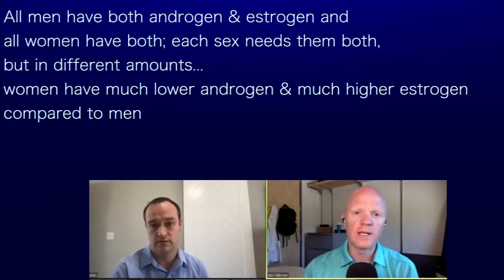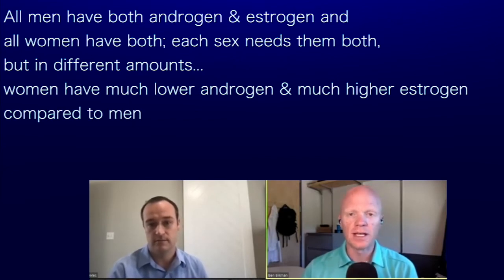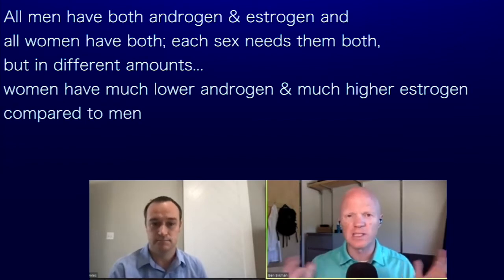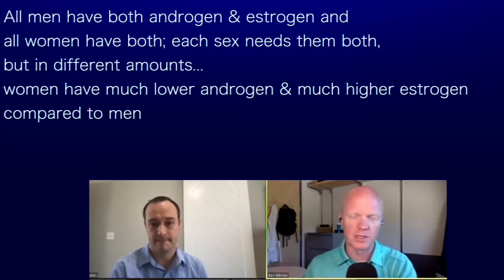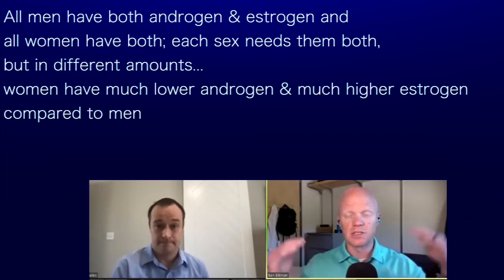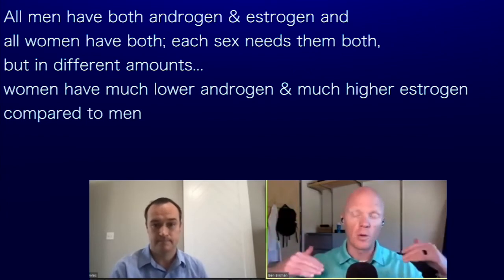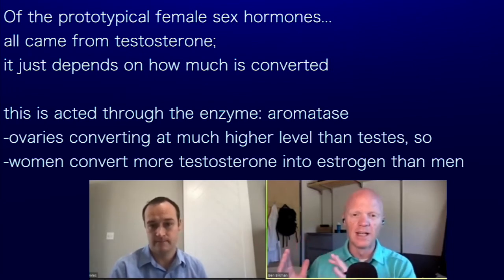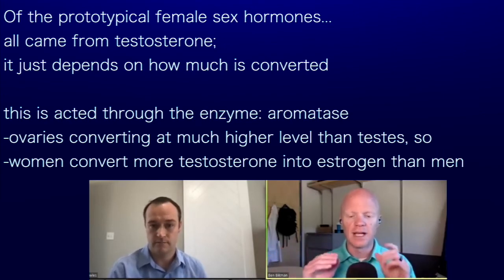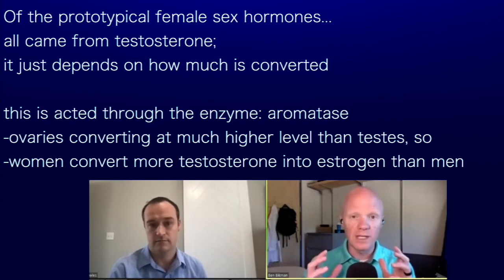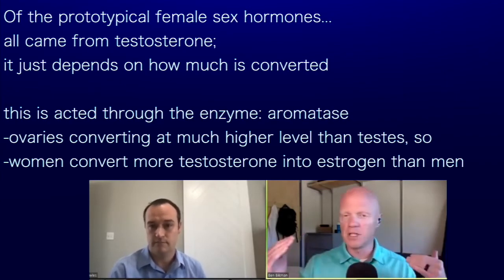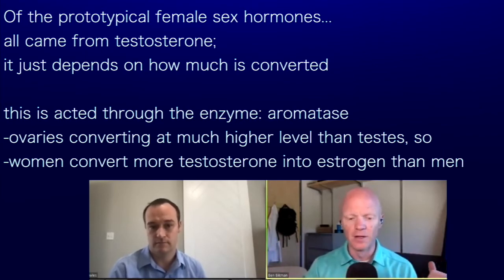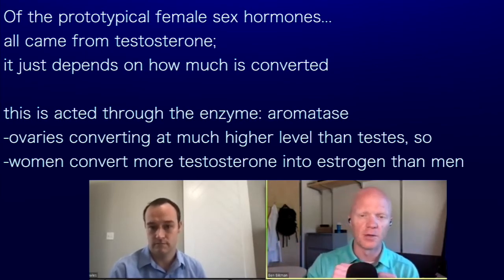Testosterone and androgens are the prototypical male sex hormones, but that's an oversimplification. All men have both androgens and estrogens, and all women have both — each sex needs them, just in different levels. Women have much lower androgen and much higher estrogen relative to men. All the prototypical female sex hormones actually came from testosterone; it's just a matter of how much is getting converted, and that's done through the enzyme aromatase. Ovaries do this at a much higher level than testes, so women convert more testosterone into estrogens.